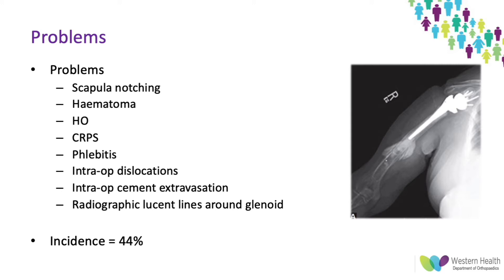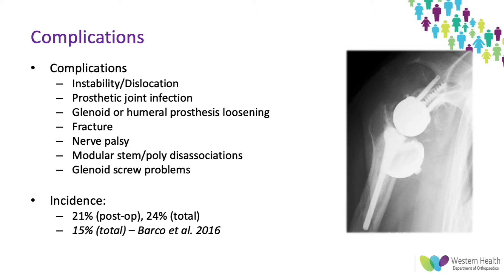In this systematic review, the incidence of problems occurring was about 44%, whereas complications — things like instability, dislocation, infection, loosening, fracture, and nerve palsies — had an incidence of 21% for post-op complications and 24% for total complications including intraoperative events.